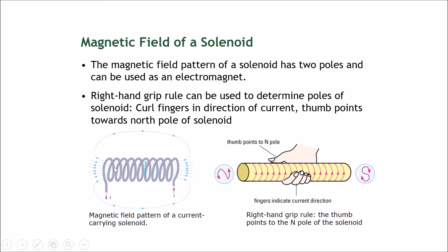If you loop it many, many, many times, and it comes back down over here, then actually coordinate the magnetic flow, the magnetic fields, and this part here will be a strong north pole, and this part here will be a strong south pole. The magnetic field pattern of a solenoid has two poles, and it can be used as an electromagnet. We can use the right-hand grip rule in the method which you were taught originally in the previous parts. You can use it to determine the poles of the solenoid. Curl fingers in direction of current, thumb points towards the north pole of a solenoid.